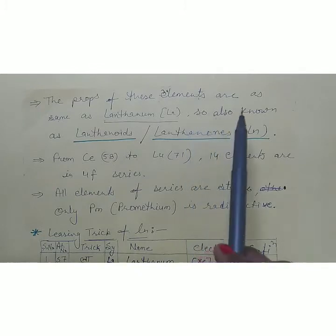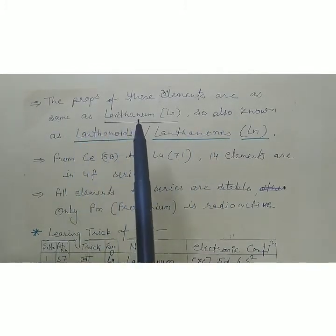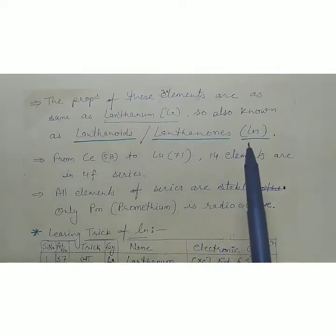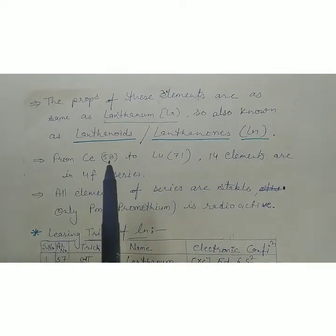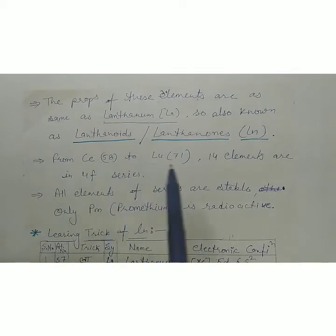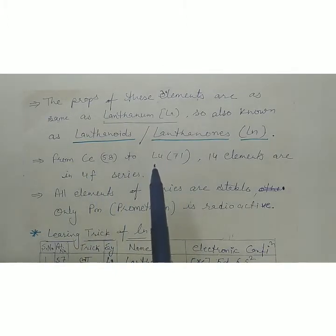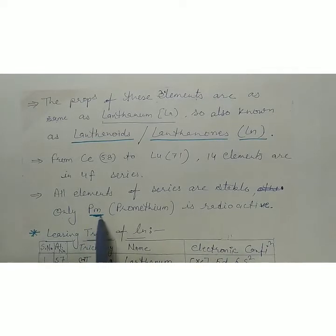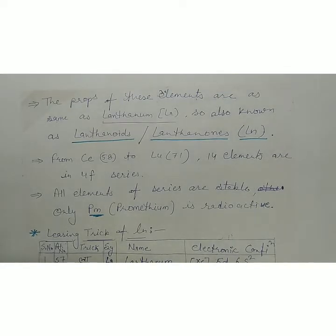The properties of these elements are the same as lanthanum, so they are also known as lanthanoids or lanthanons — from cerium (atomic number 58) to lutetium (atomic number 71), making 14 elements in the 4F series. All the elements are stable in this series except Pm, meaning promethium, which is radioactive in nature.